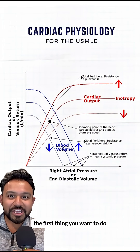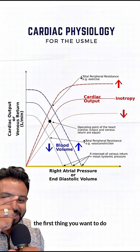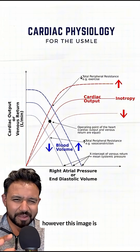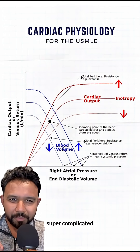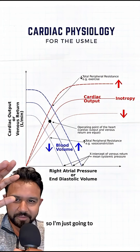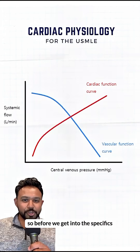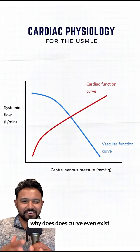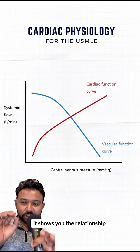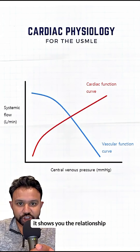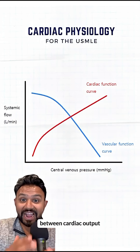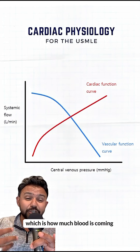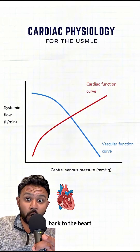Whenever you have a graph, the first thing you want to do is define the axes. However, this image is super complicated, so I'm just going to make it more simple. Before we get into the specifics, why does this curve even exist? It shows you the relationship between cardiac output and venous return, which is how much blood is coming back to the heart.